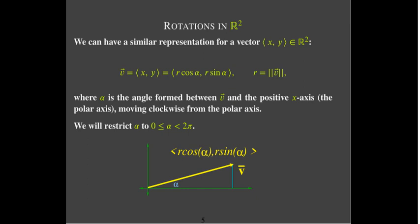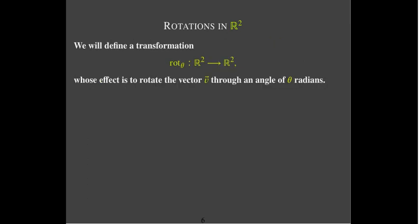We will restrict the angle to be positive and less than 2 pi. So, what we're going to do is define a transformation — it's going to be a rotation through theta. The angle theta could be degrees or radians. The name of the transformation is ROT sub theta. The effect is to rotate a vector through an angle of theta.